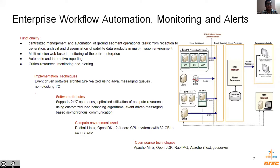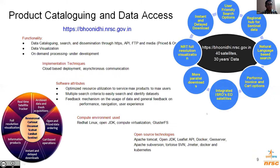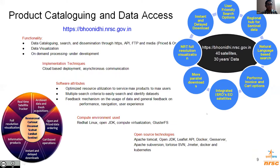Another important category of software is the software to check the quality of data products and provide feedback for system improvement. This software does automatic quality checks for pixels, line losses, radiometric and geometric inconsistencies, followed by interactive image assessment. The software is built using client-server architecture wherein automatic checks happen at the server and interactive image assessment happens at the clients. Shell scripting, inter-process communication, and socket programming are some of the implementation techniques. Open source technologies used extensively here include GDAL, OpenJDK, Postgres, OpenCV, Redis, QGIS, and Docker.